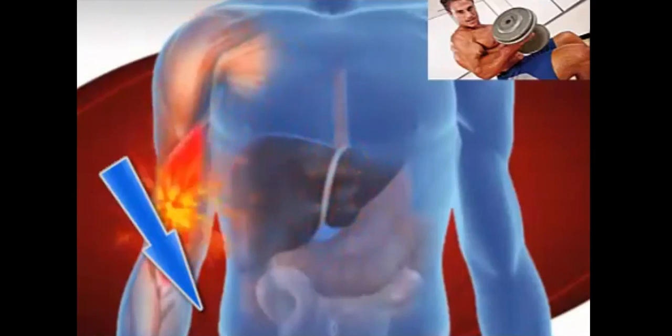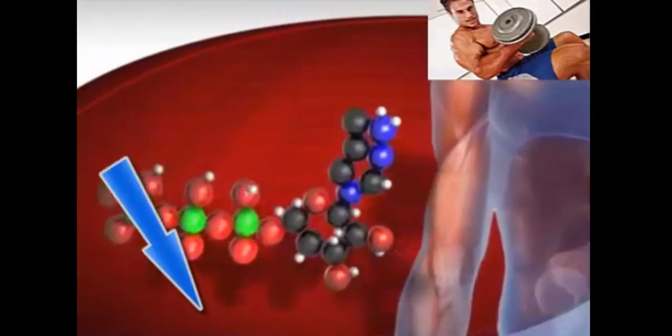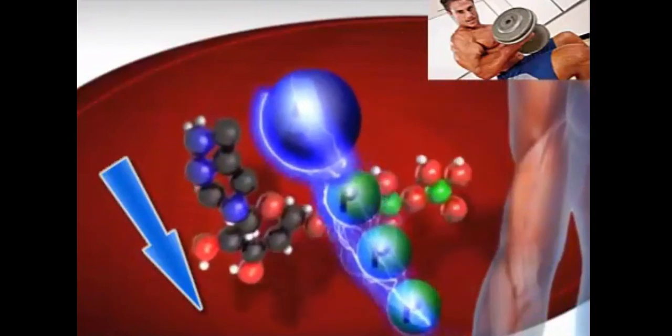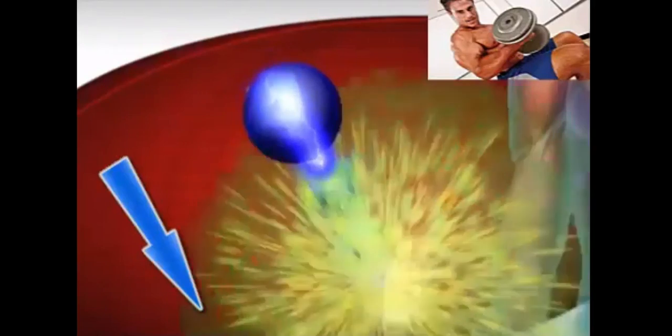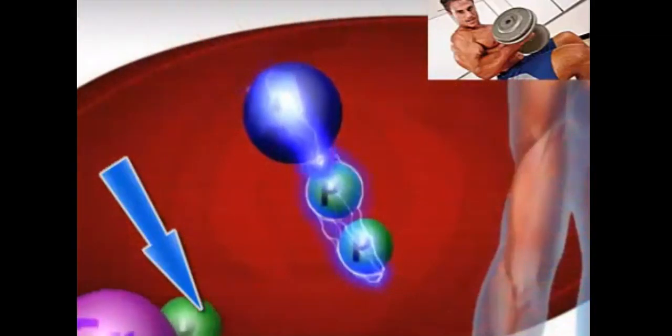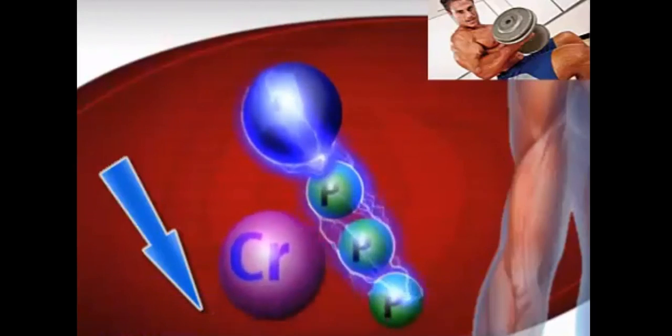It drives burst muscle contractions by fueling ATP, the energy machines in muscle. ATP are high energy molecules with three strongly bound phosphates. When a phosphate breaks loose, energy is released.